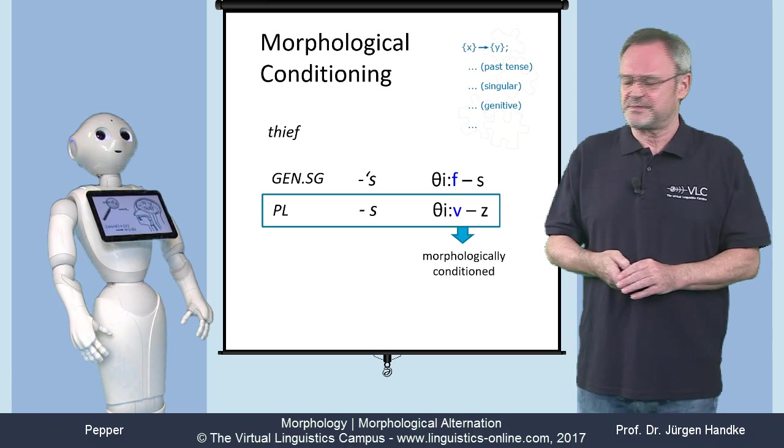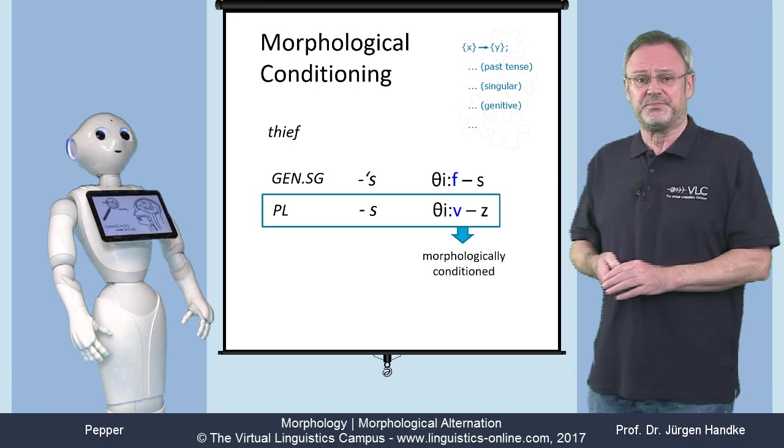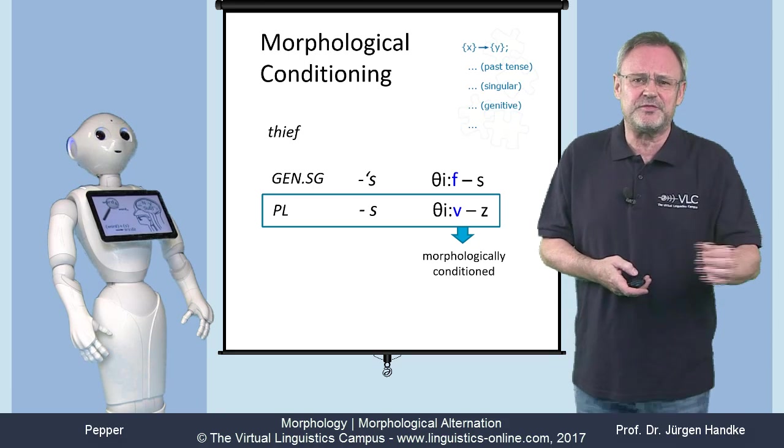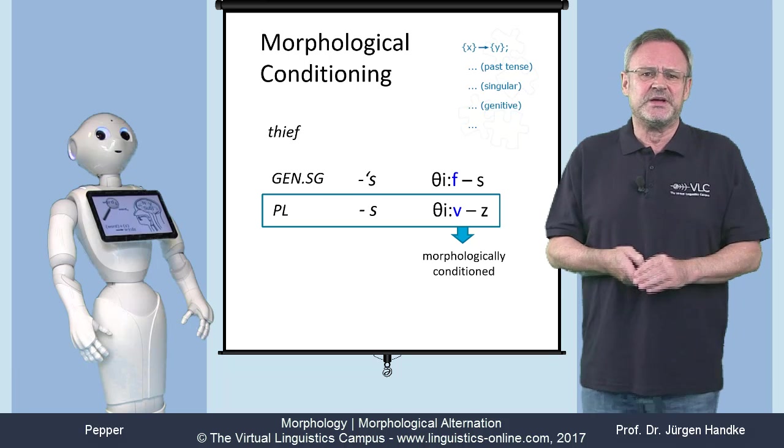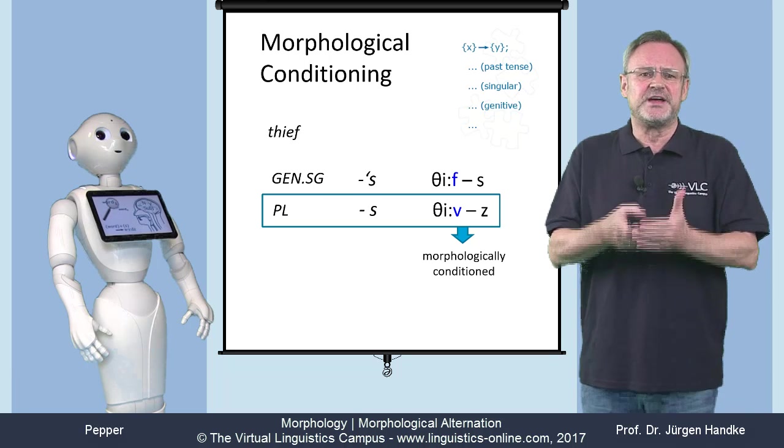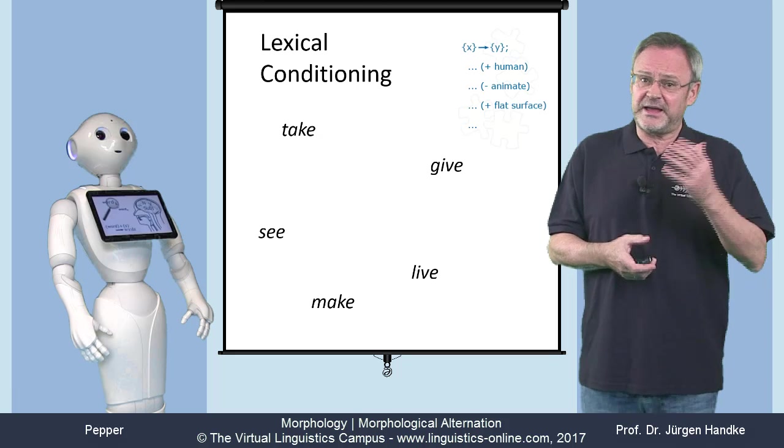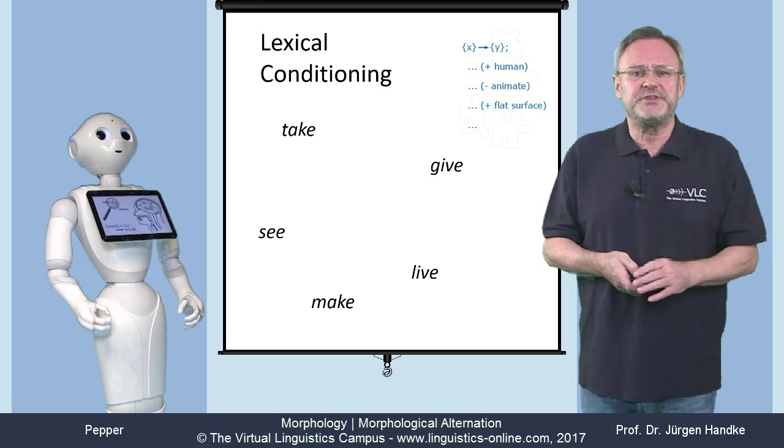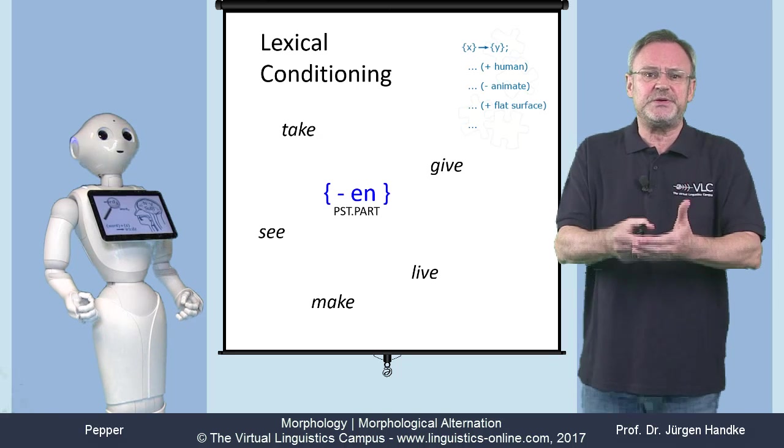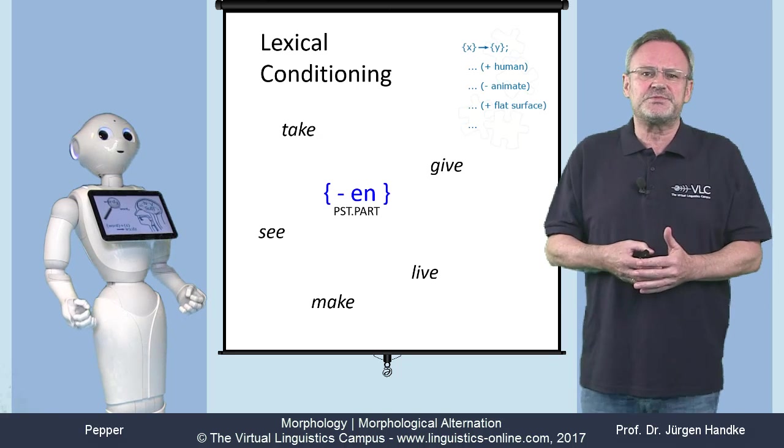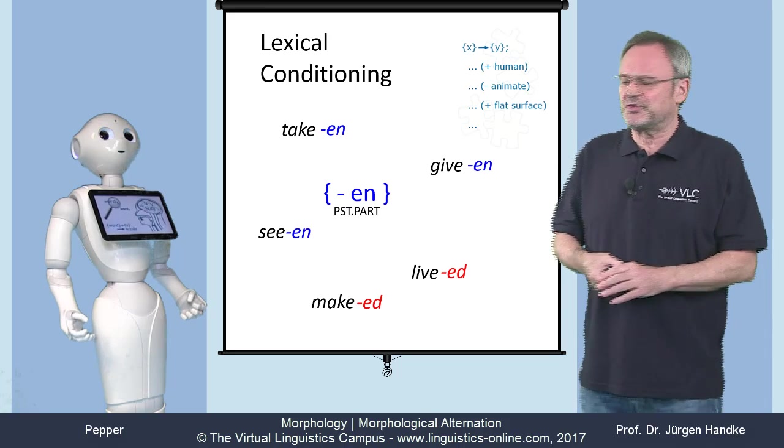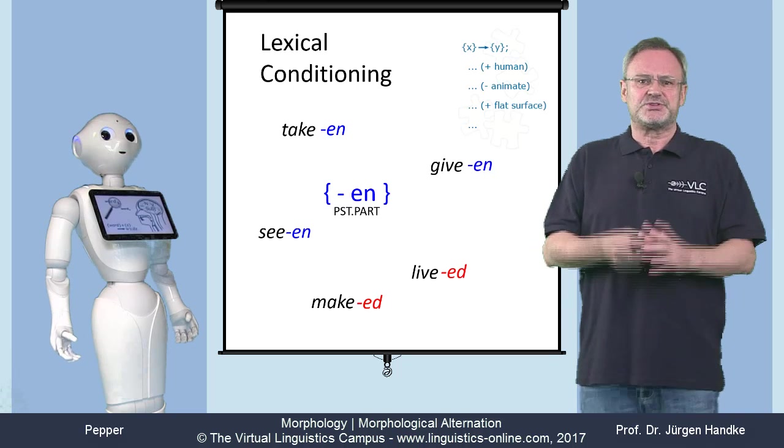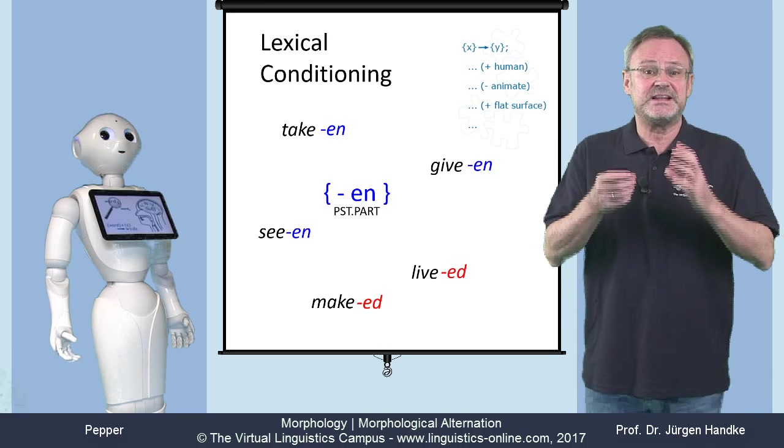So, the plural of thief is morphologically conditioned. Yes, but there are cases where neither the phonological nor the morphological context can help, and where the choice of allomorphs cannot be derived by any rule at all, and it has to be learned. This applies to the English past participle affix -en, where speakers have to learn which verbs take this suffix. For example, taken, seen, given, and so on. Such cases are referred to as lexical conditioning.